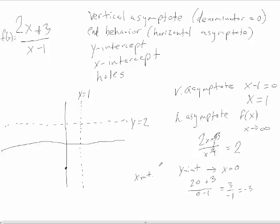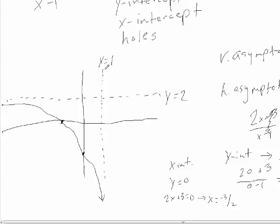For the x-intercept, we set y = 0, which happens when the numerator equals 0. So when 2x + 3 = 0, or x = −3/2, that's the x-intercept at (−3/2, 0). As far as holes go, we don't have any because there are no factors common to the top and bottom. So roughly speaking, this is what our rational function looks like.